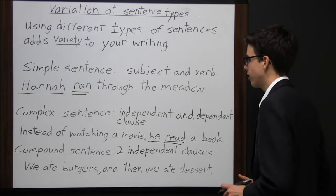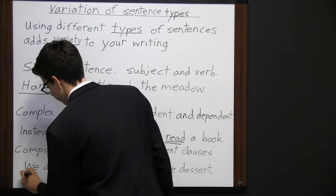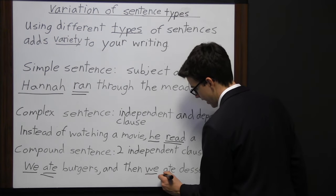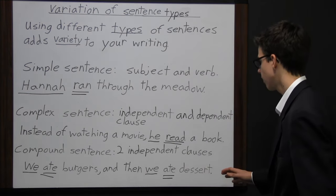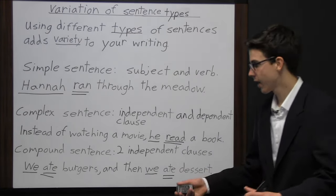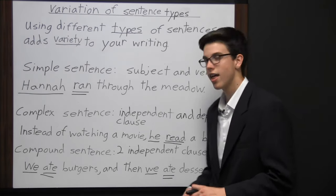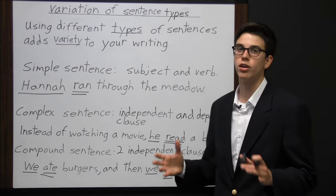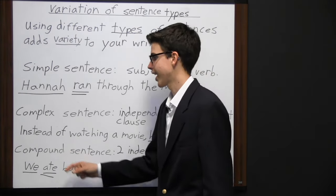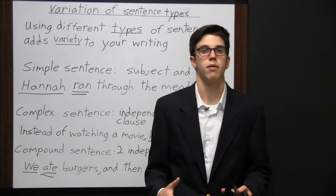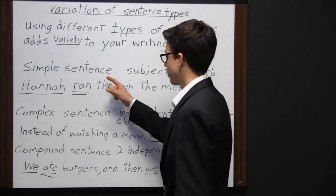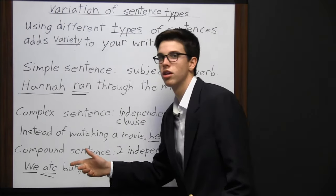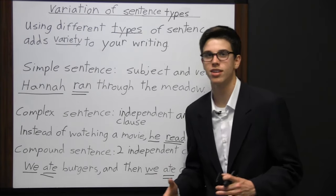A compound sentence has two independent clauses. For example: 'We ate burgers, then we ate dessert.' Both 'we ate burgers' and 'then we ate dessert' could be sentences by themselves — those are two independent clauses joined into one sentence. Using all three types gives your writing variety and makes it more interesting. Simple sentences tend to be short, while complex or compound sentences can be longer, and having different sentence lengths makes your writing more engaging.